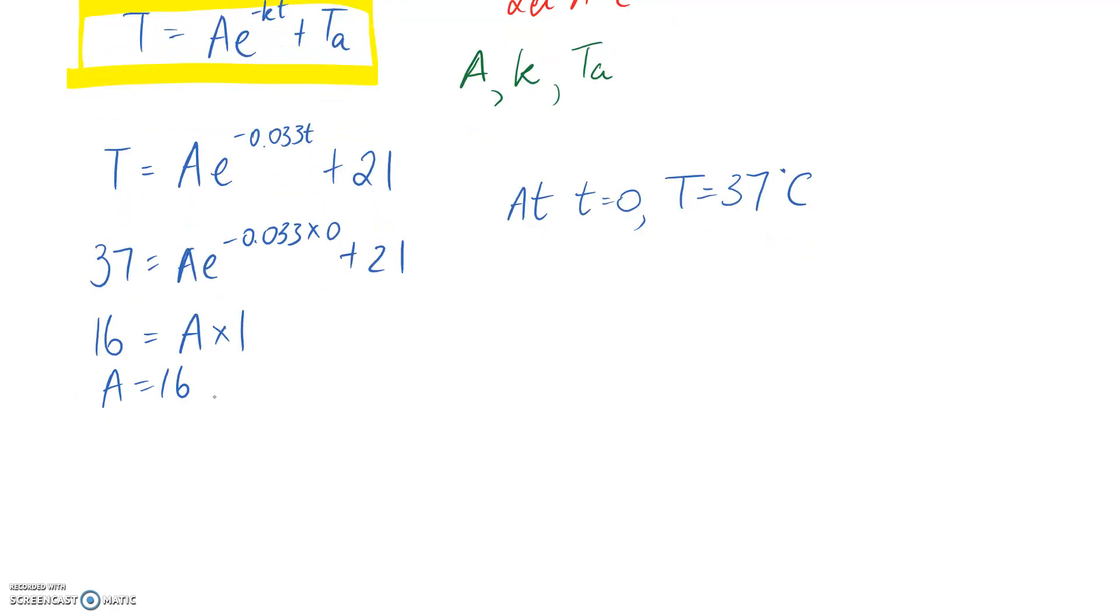Now all I need to do is substitute that back in to have all of my constants in the equation. So it'll be 16e to the negative 0.033t plus 21. So this here is the unique solution, such that I can figure out what the temperature is at any given time.